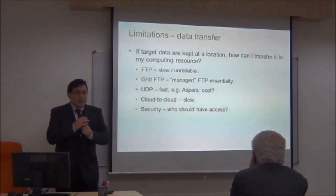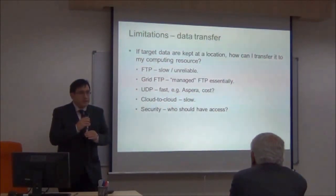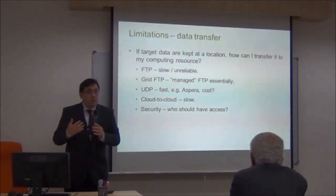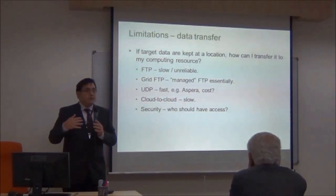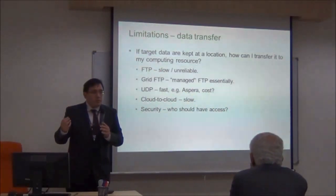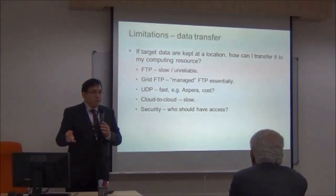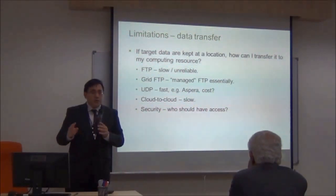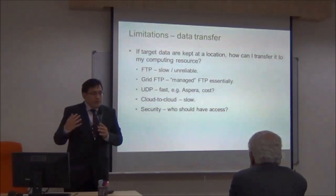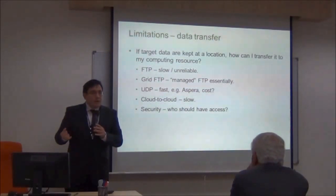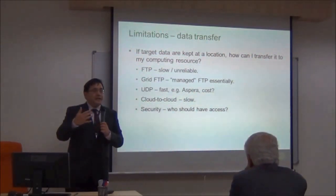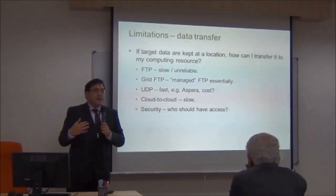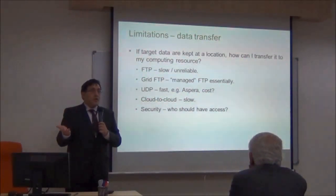Other limitations include data transfer. In today's bioinformatics analysis, you often need to transfer data from one site to another — downloading data from us at the EBI in Cambridge, UK, or from collaborators in the US. The normal way of doing this is FTP, the File Transfer Protocol, which has been around for decades, but it is actually very slow and unreliable over large geographical distances. Instead, I would recommend something like a Grid FTP server, which is more managed — if I have a Grid FTP at EBI and you have one here, you can tell your Grid FTP to download from mine and it will happen in the background over a week or two.